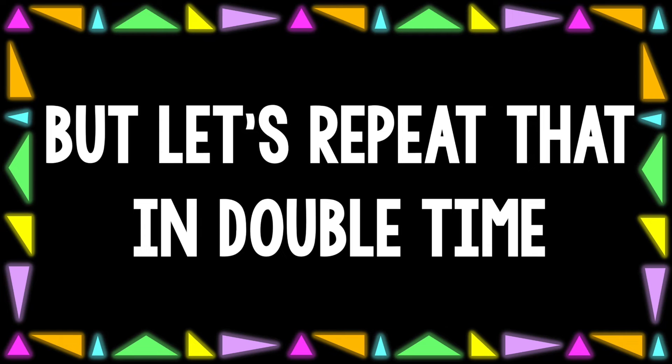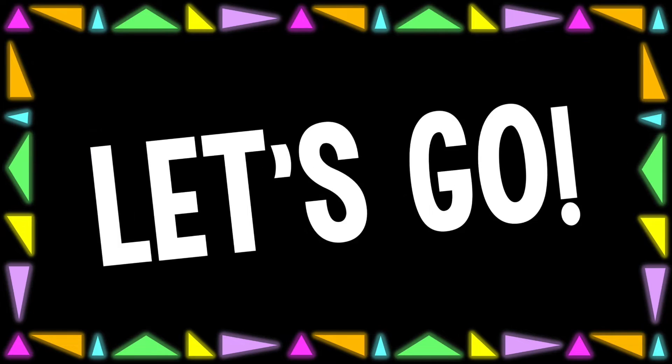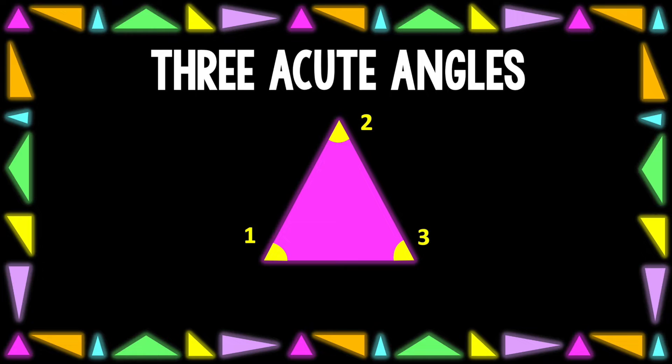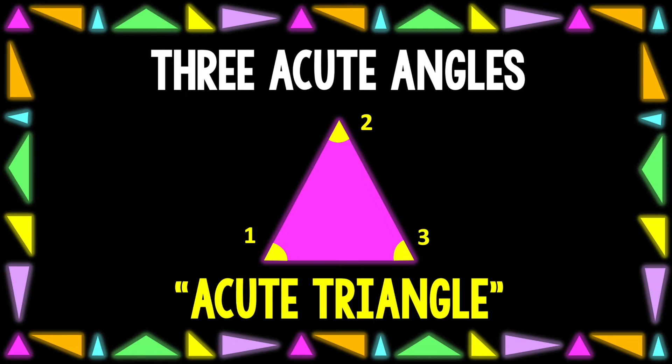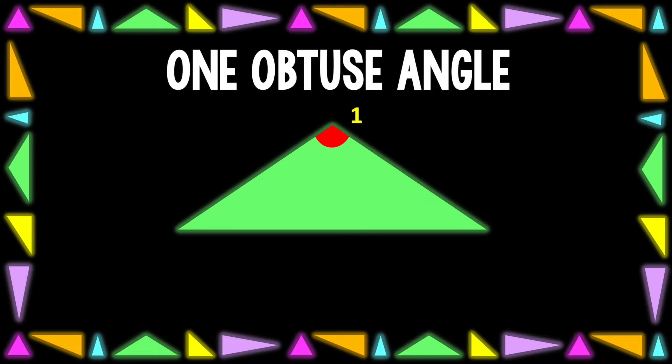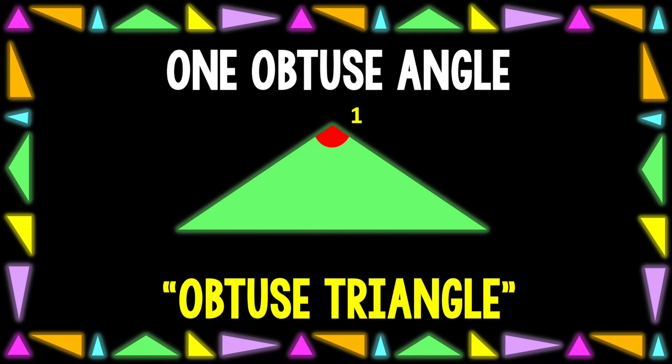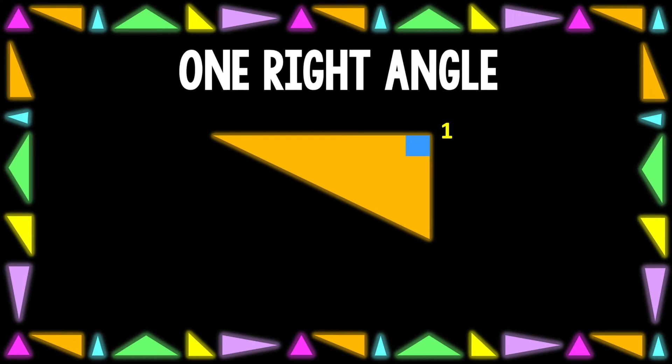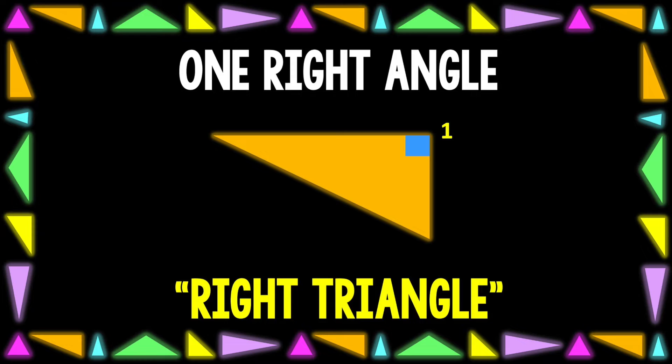That was great! Let's repeat that in double time. Three acute angles — it's so cute! When there's one obtuse angle, then it's obtuse. If you spot a right angle, then you know it's right.